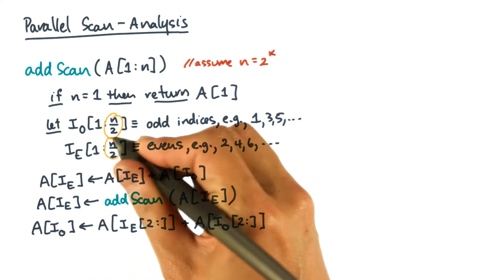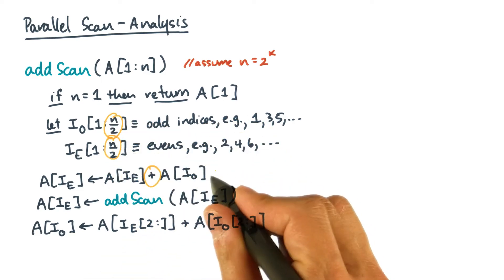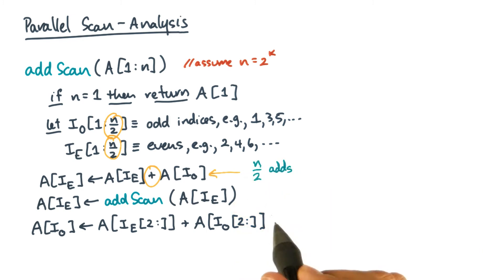Notice that this algorithm does n over 2 additions at this statement. Then at this statement, it does n over 2 minus 1 additions. And finally, the add scan operates on a problem that's half the size.